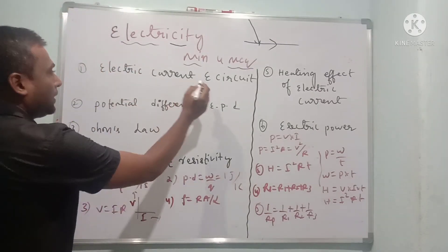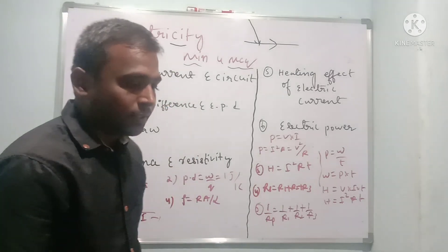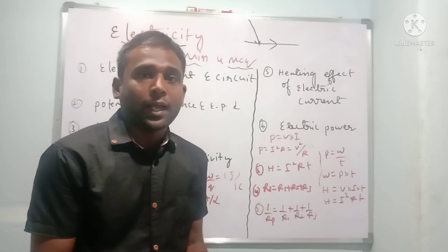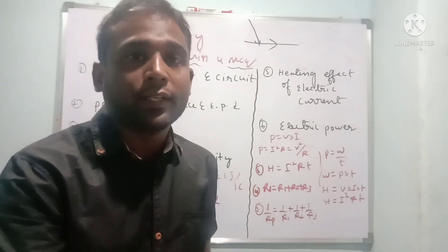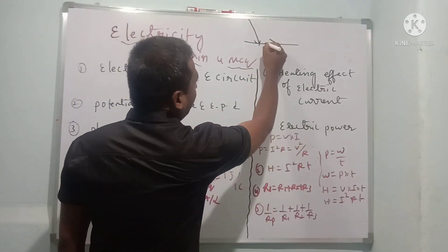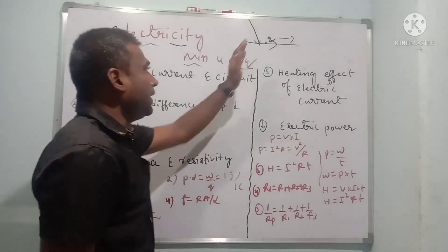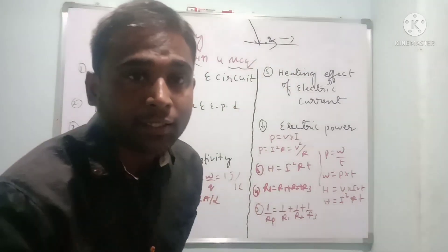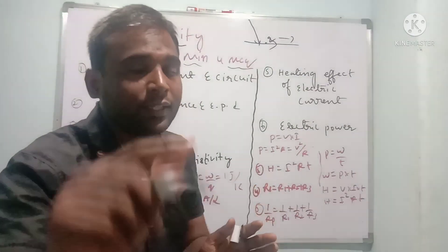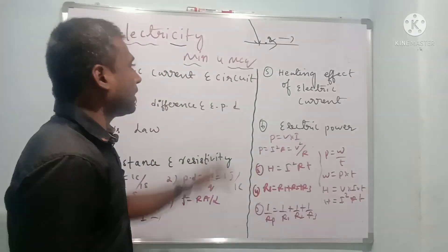First topic is electric current and circuit. What is electric current? When you take metals — they are good conductors of heat and electricity — after providing a potential difference, the electrons will come to the surface of the atom and constitute electric current. The rate of flow of electrons, meaning the number of electrons which move in one second, is called electric current.